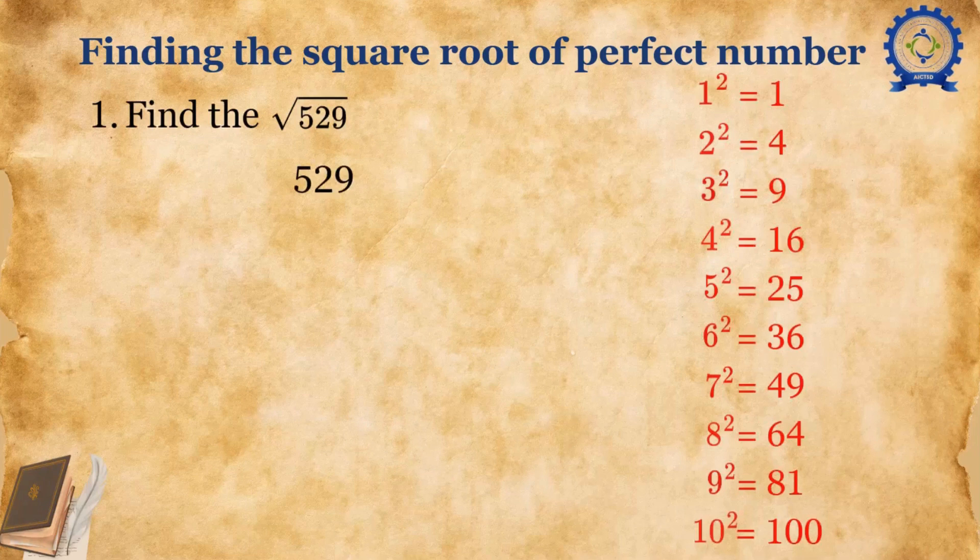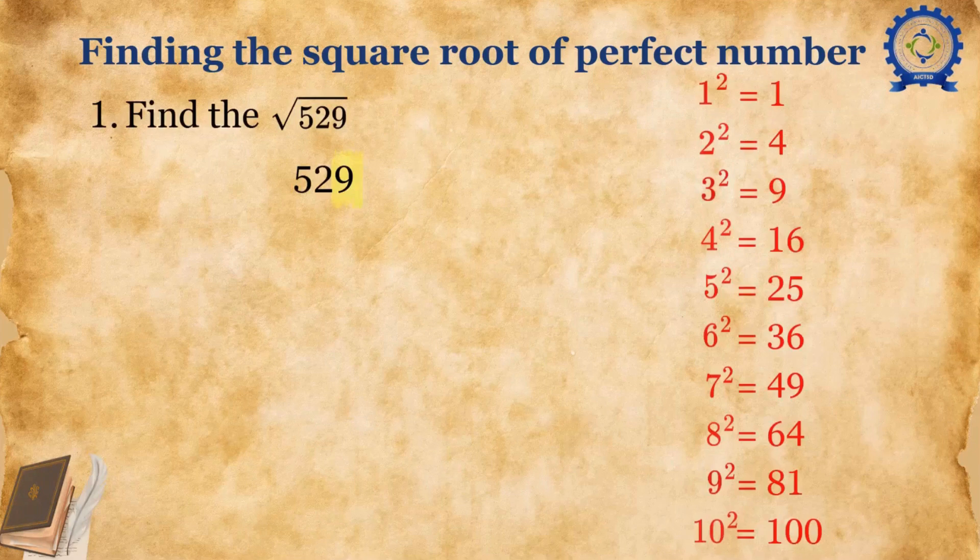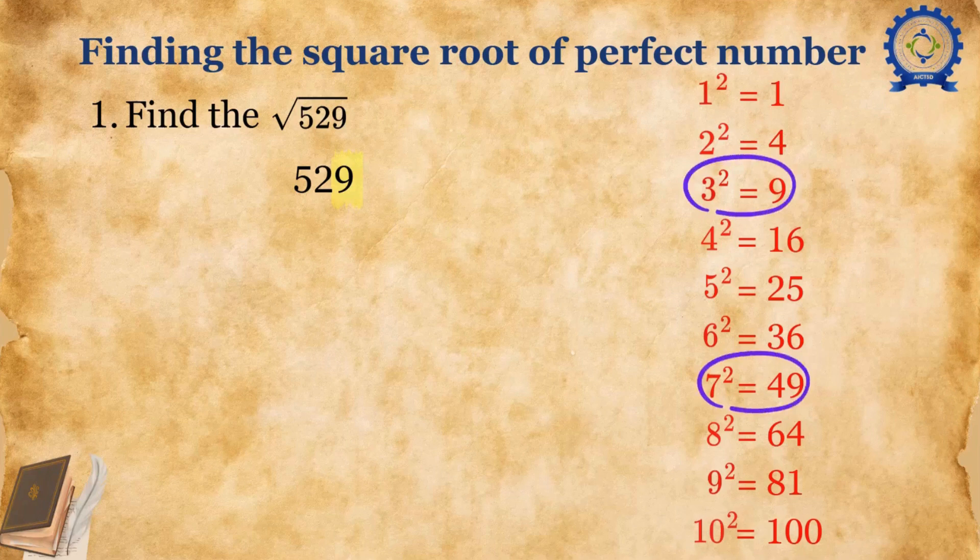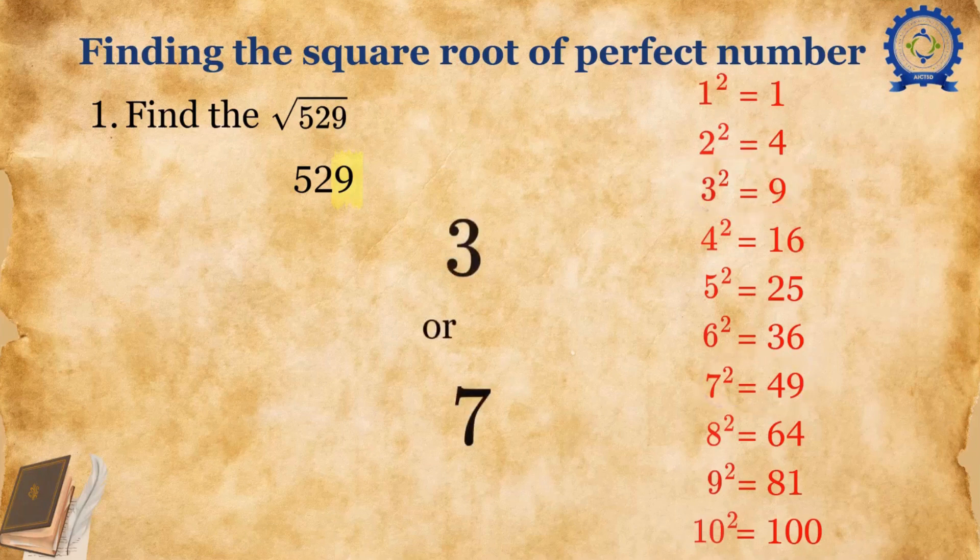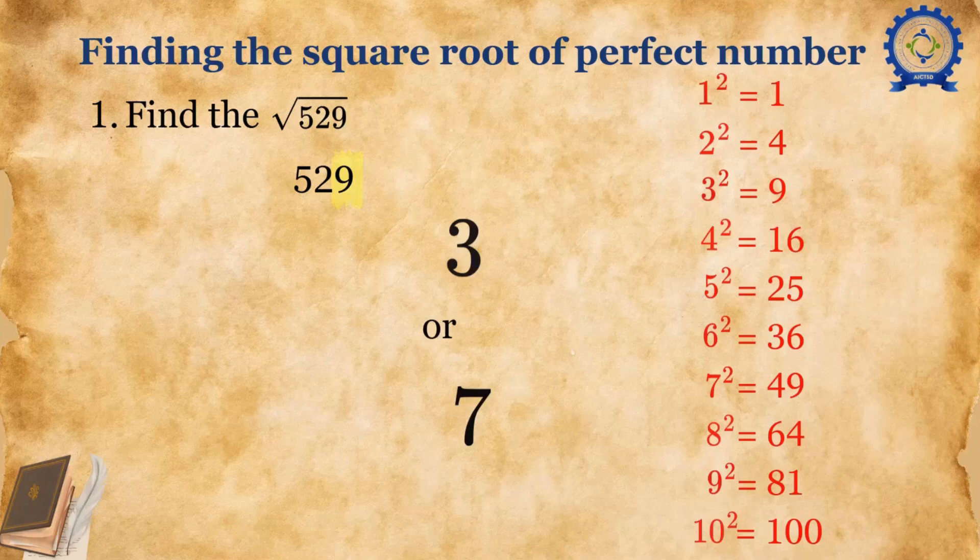Let's consider the number 529. The unit digit here is 9. We have 3² = 9 and 7² = 49. These are the only two numbers which have 9 in the unit digit. So we'll consider 3 or 7 as the unit digit of our answer.